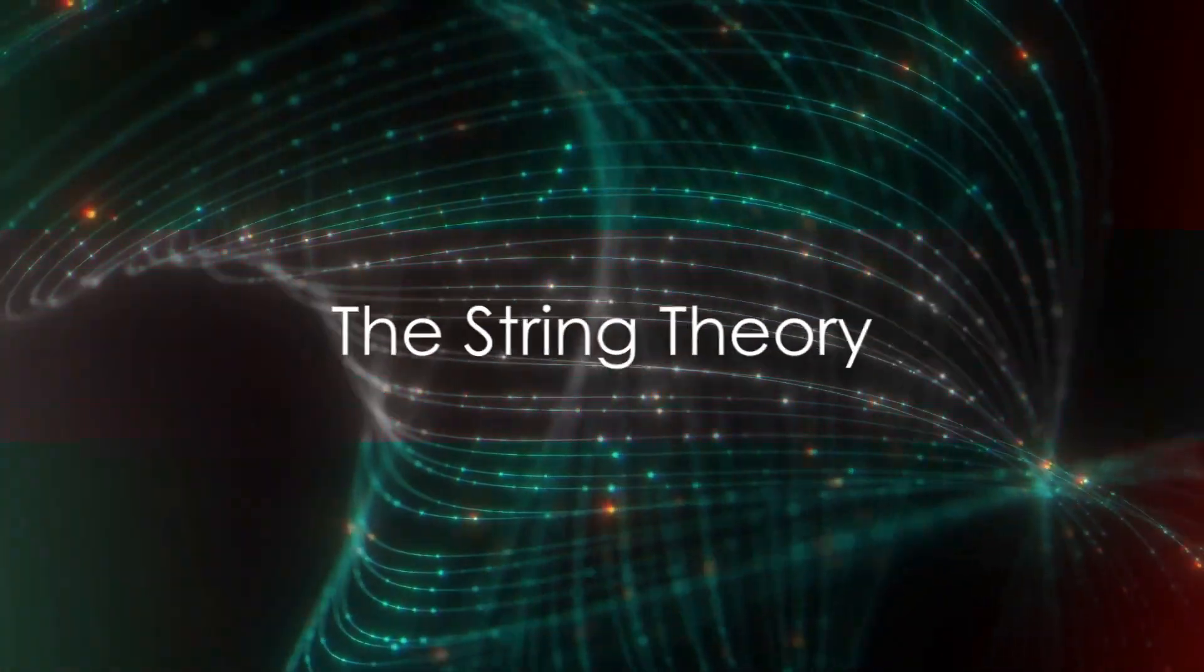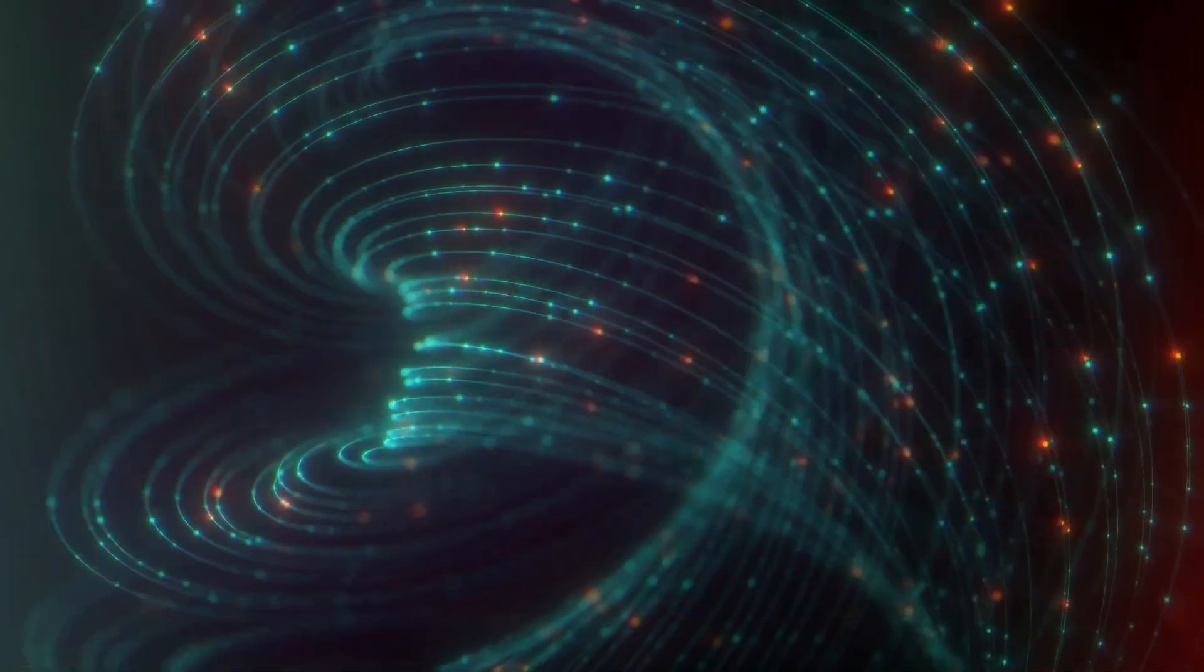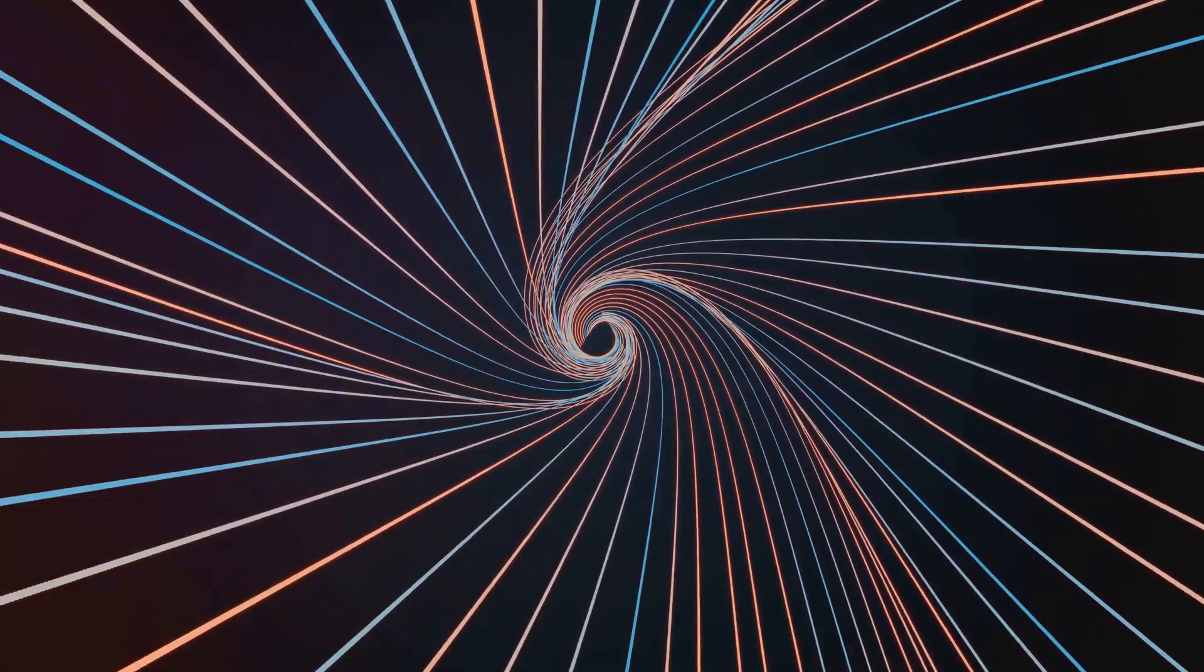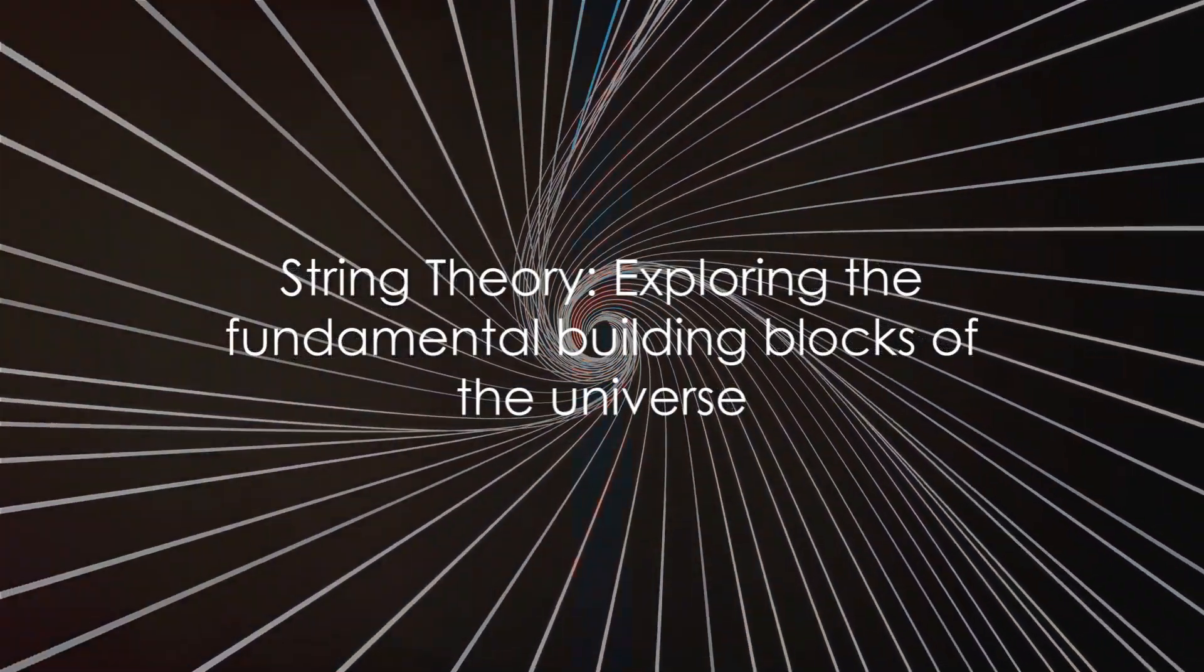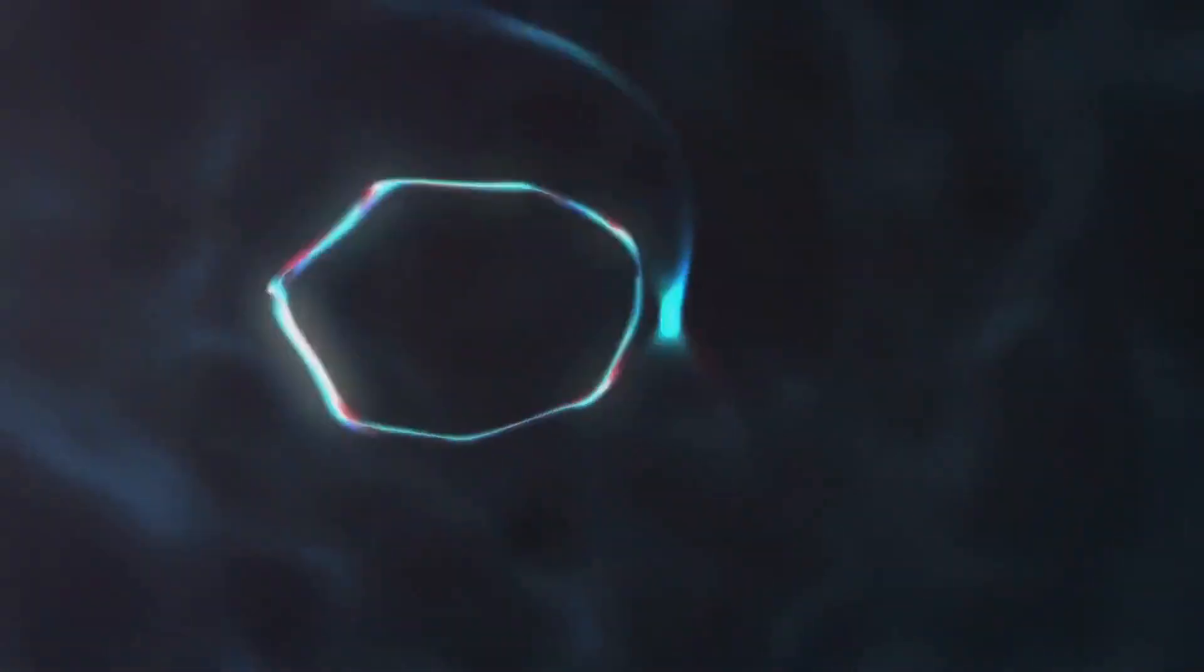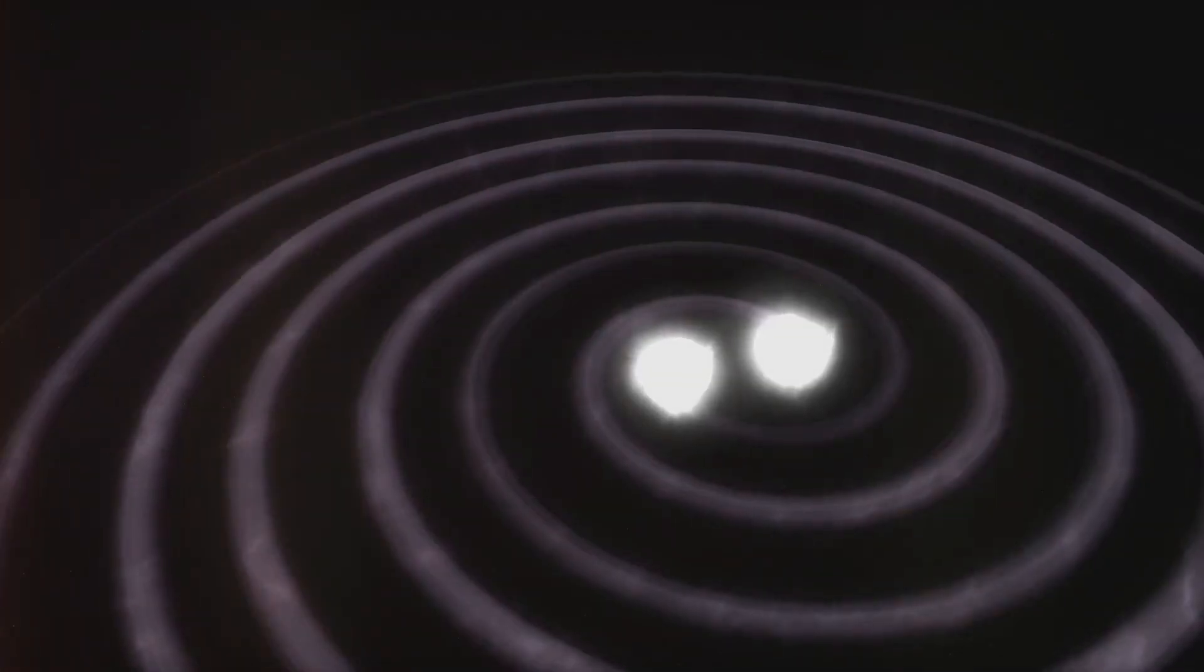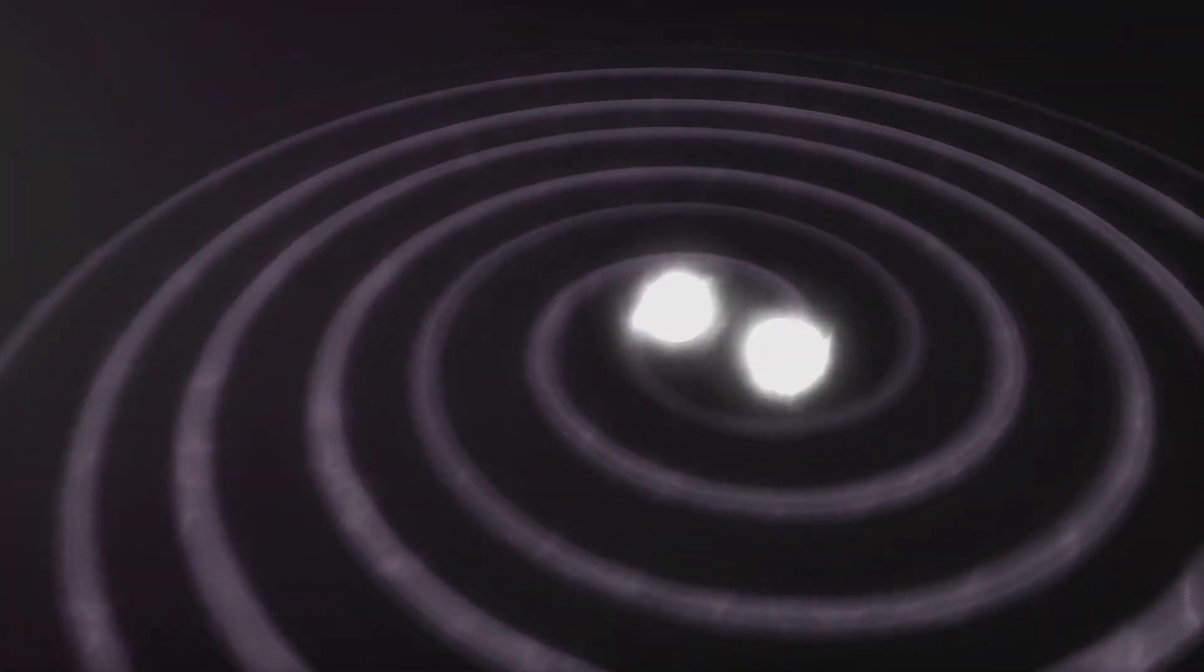Coming in at number 8 is the string theory. Now, imagine if the smallest particles in our universe were not zero-dimensional points, but one-dimensional strings. This is the radical proposition of string theory. It's this theory's ambitious attempt to reconcile two major frameworks of physics: quantum mechanics, governing the very small, and general relativity, ruling the very large.